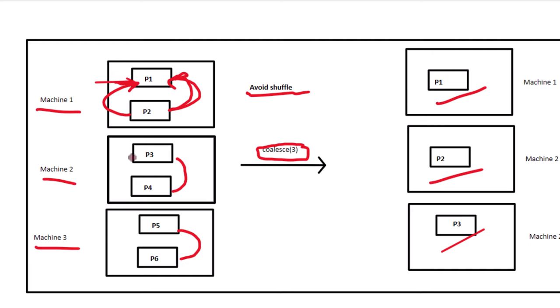Similarly, partition three remains the same and partition four merges into partition three. Only a very little shuffle happens. The key differences are: first, coalesce will always reduce the number of partitions — it cannot increase them. Second, repartition can both increase or decrease the number of partitions. Third, repartition reshuffles all the data across partitions, while coalesce only shuffles a small amount of data and merges into existing partitions.